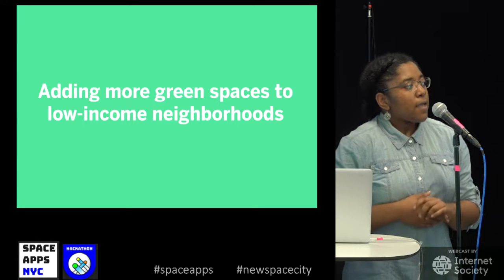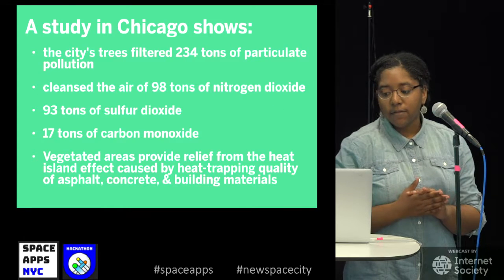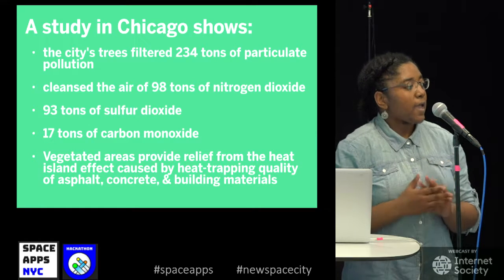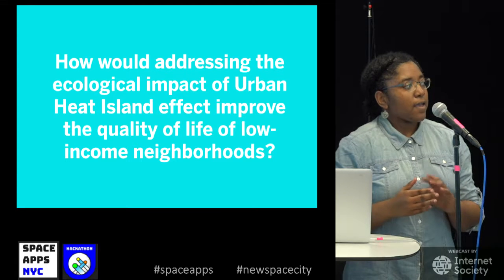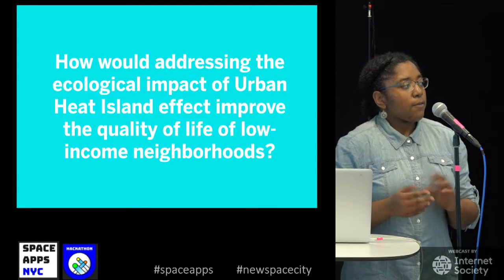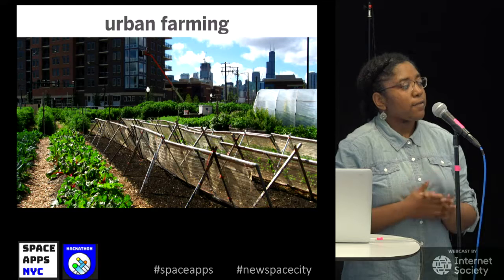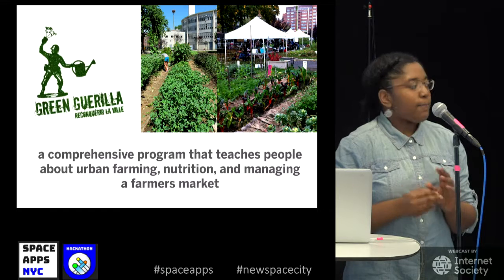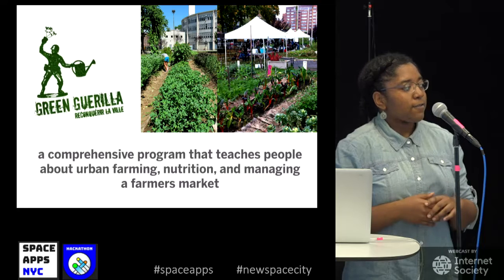So what can we do? We suggest adding more green spaces to low-income neighborhoods. A study in Chicago showed that vegetated areas provide relief from the heat island effect caused by the heat-trapping qualities of asphalt and concrete. We also suggest urban farming in particular. There are already organizations out there leading this effort to educate people on urban farming, better nutrition, and even managing a farmer's market — such as Green Gorilla.